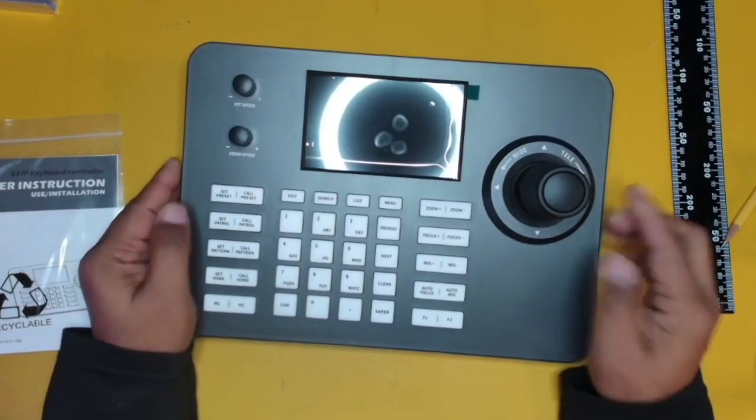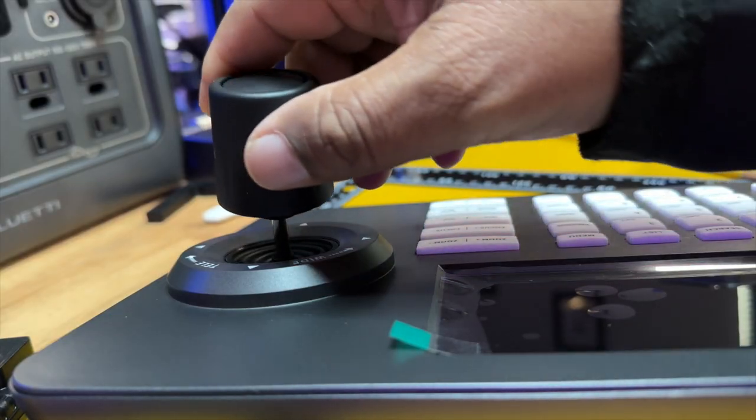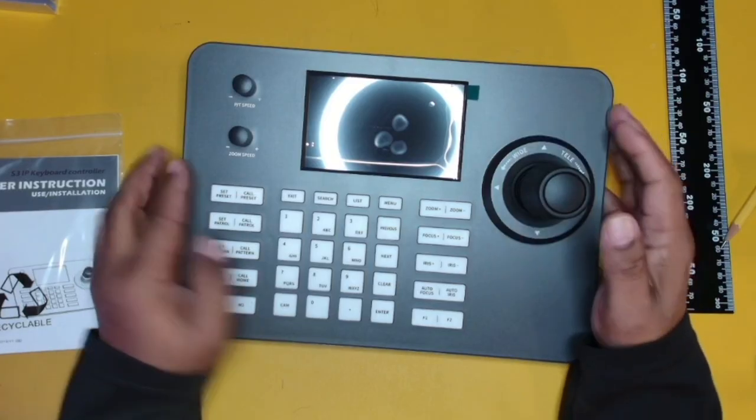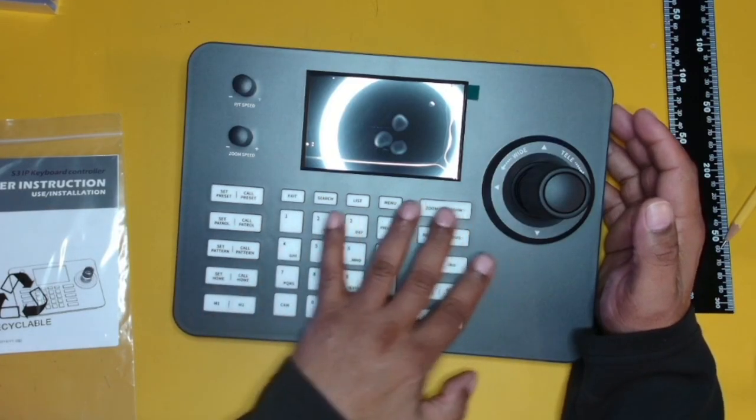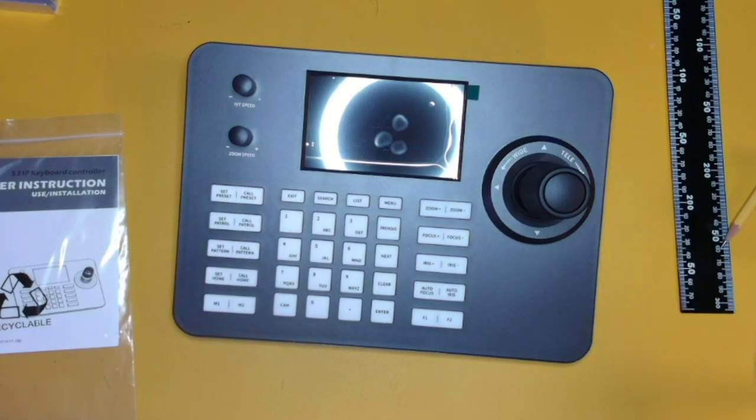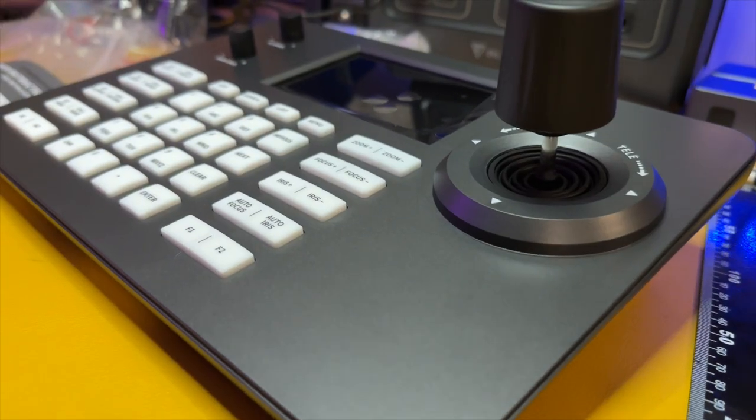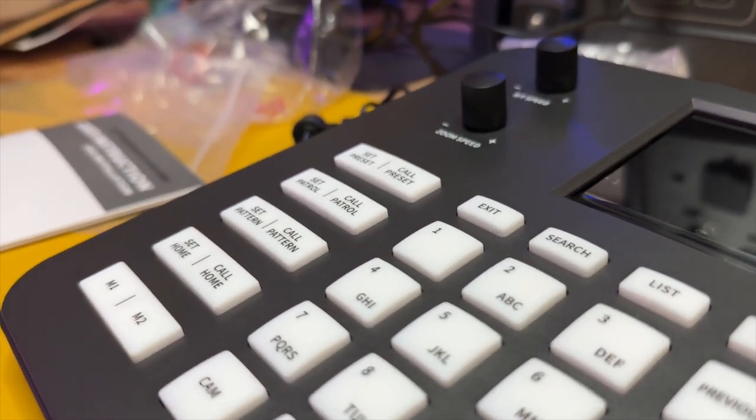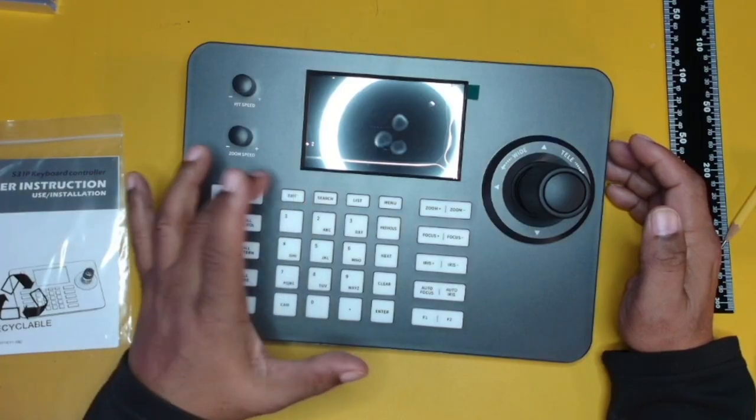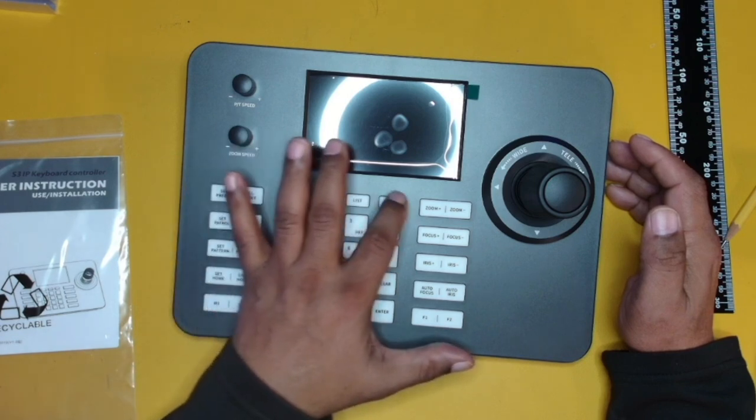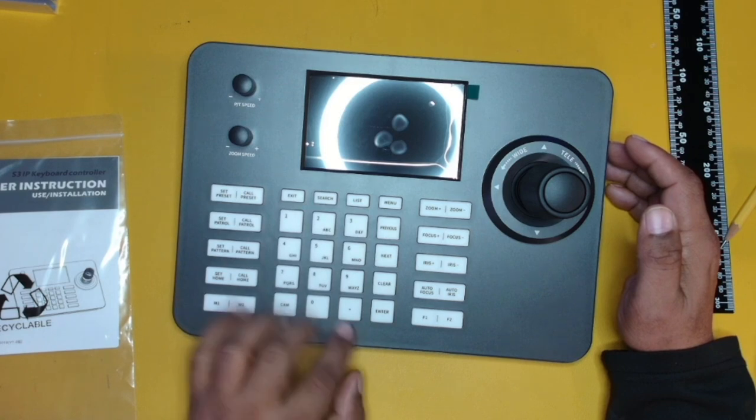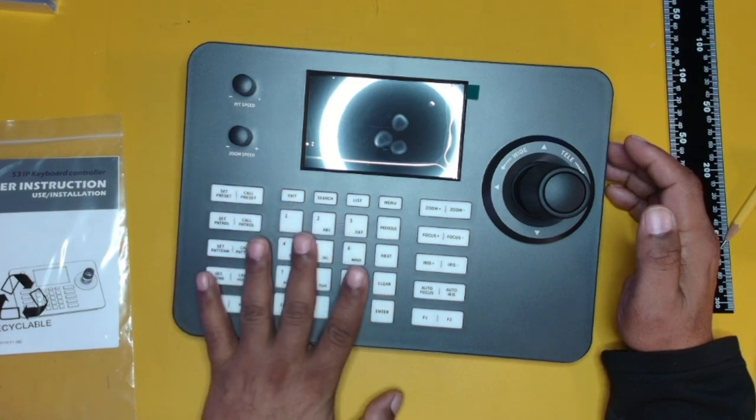So what we have here is our 4D joystick. This is going to give us control of our PTZ cameras. You have all of your different touchpads here. Now, what we're going to see here, more importantly, we have our presets, our sets for control, patrol. We have our home buttons, our different M1 buttons, our exit, search, list, menu, all of these different buttons here. Now, these 1 through 10 pads are going to be used for calling up your cameras.